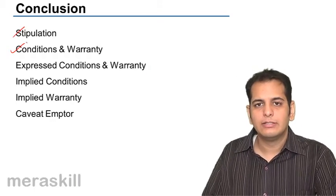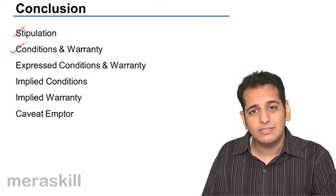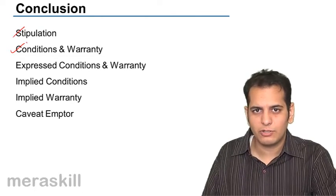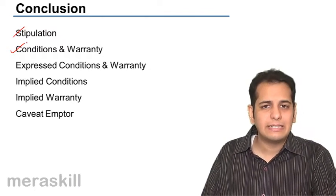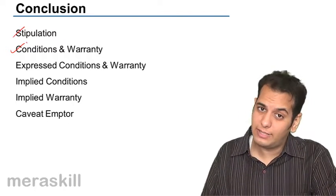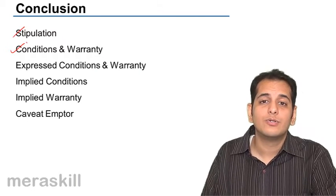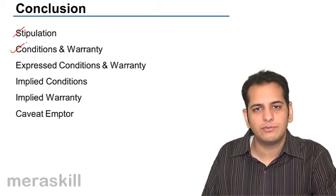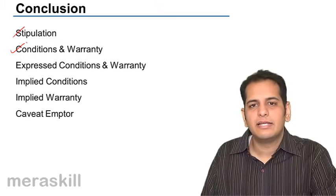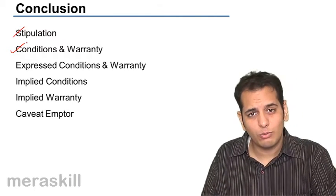Condition is a stipulation which is essential to the main purpose of the contract. The breach of which gives the buyer, who's the aggrieved party, a right to repudiate the contract as well as claim damages. So two rights are given.